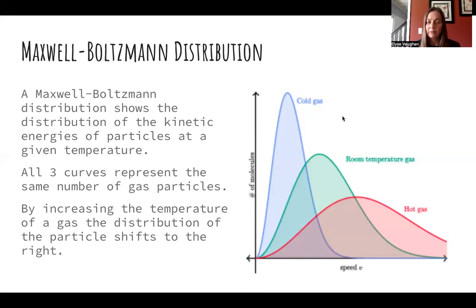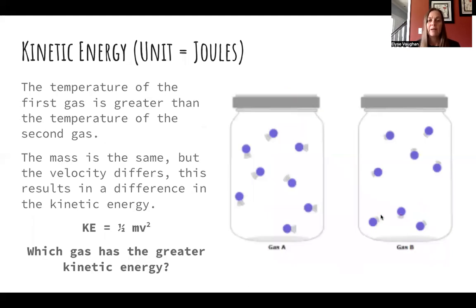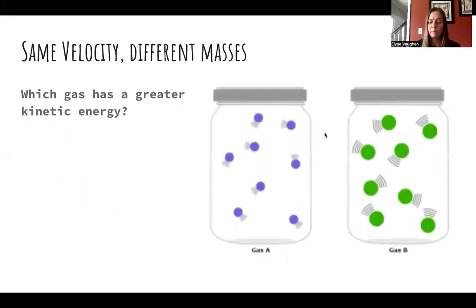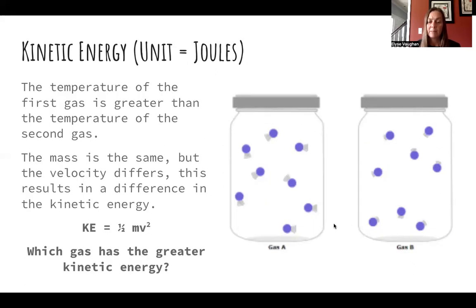When kinetic energy is proportional to temperature, we're talking about the average kinetic energy — represented by the peak. If two gases have the same mass and gas A is moving faster than gas B, the only difference is velocity (v in KE = ½mv²), so gas A has higher kinetic energy and must be at a higher temperature.